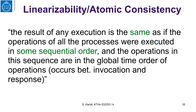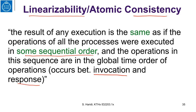Now let us look at linearizability, or atomic consistency. An execution is linearizable if the result of any execution is the same as if the operations of all processes were executed in sequential order — as with sequential consistency — but here is the difference: the operations in this sequence are in the global time order. Informally, each operation occurs sometime between its invocation in real time and its response in real time. So if one operation precedes another in that execution, then in the sequential execution, the first operation will also precede the second.